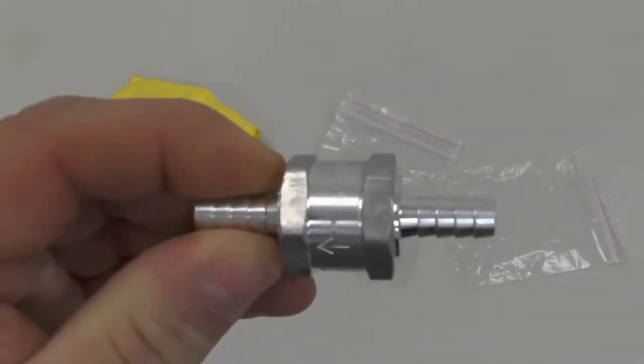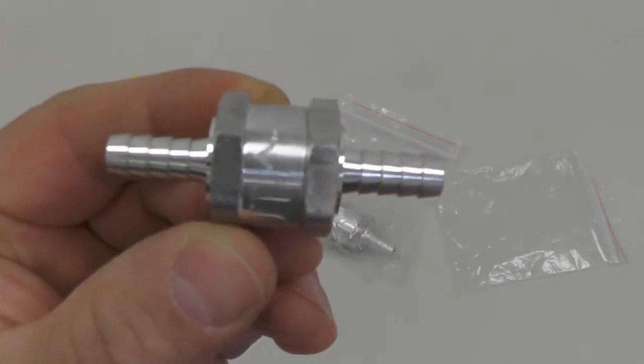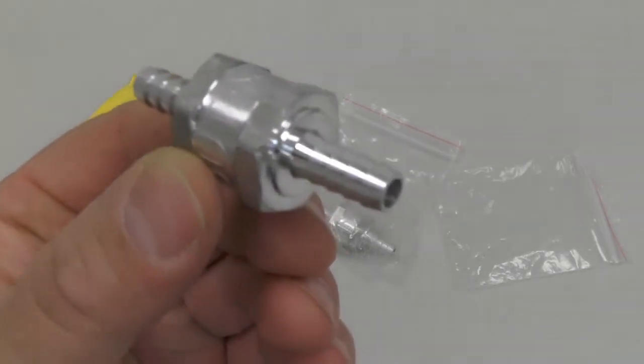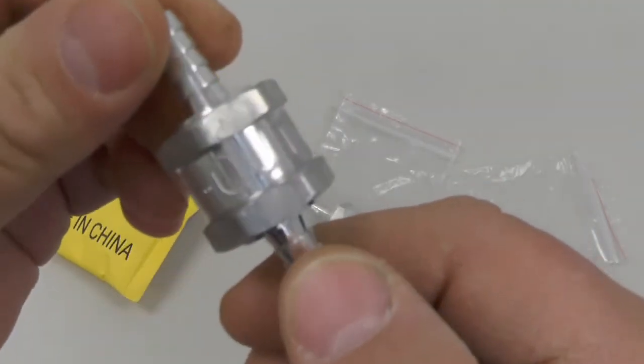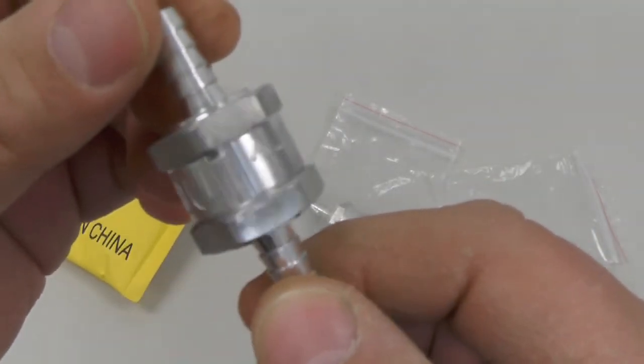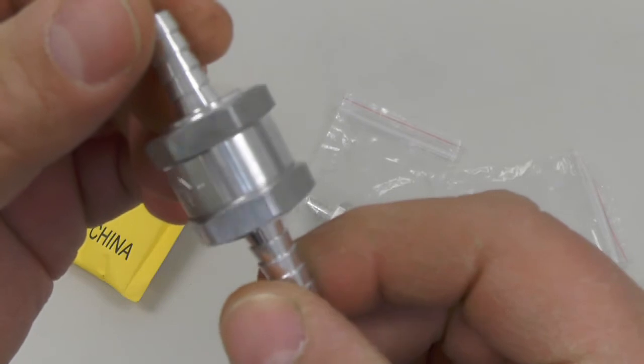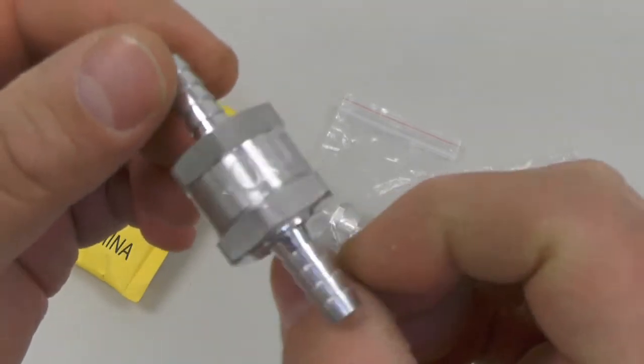So I picked these up on eBay and these are designed for 8 millimeter inside diameter tubing or 5 sixteenths of an inch, which is what the Jeep uses. On the side of it it has an arrow marked so you know which way to install it.